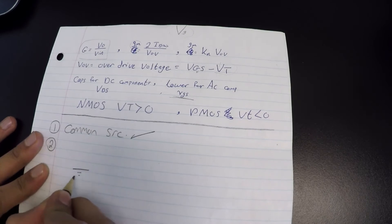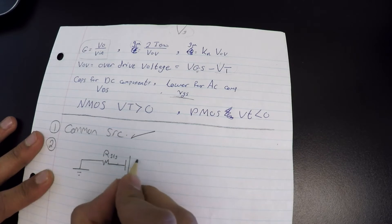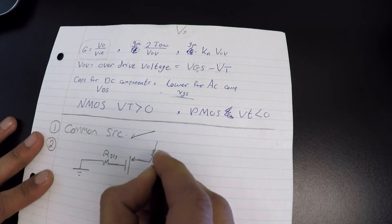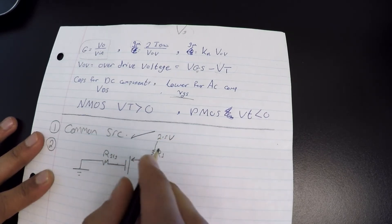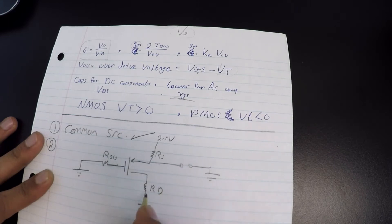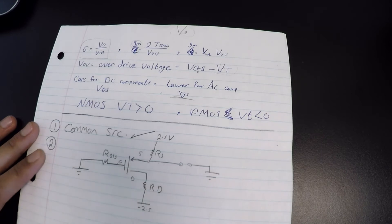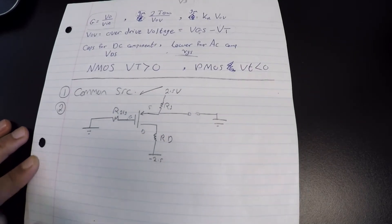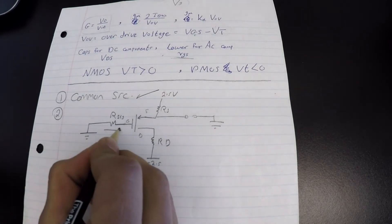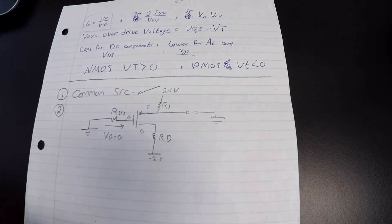So the DC circuit looks like this — we have our MOSFET with RS, 2.5 volts, negative 2.5 volts, and RD. Since this is a short circuit, no current goes through certain branches. The source is here, the drain is here, the gate is here. There is no current flowing at the gate because it's basically an open circuit, and this node is grounded, so VG equals zero.